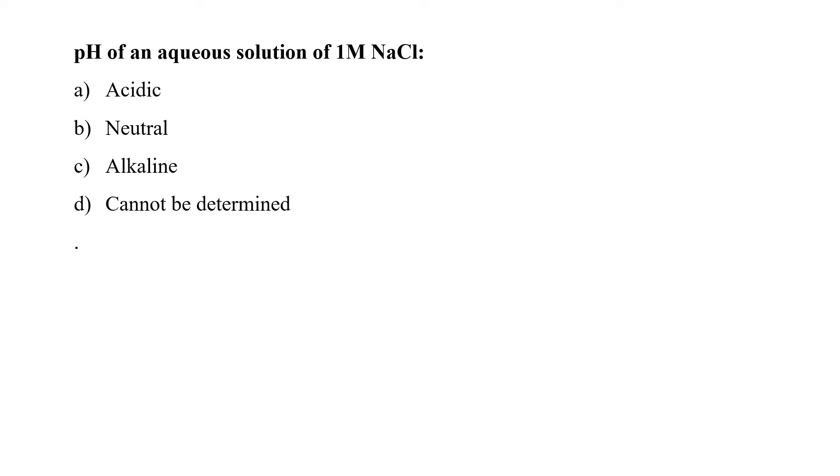The pH of an aqueous solution of 1 molar NaCl would be acidic, neutral, alkaline, or cannot be determined. When a strong acid and a strong alkali combine, they form neutral salts. For example, whenever HCl combined with NaOH, it forms NaCl and H2O. Both do not affect the pH. Hence, the pH of the water would be 7, that is neutral. So option B would be the correct answer.